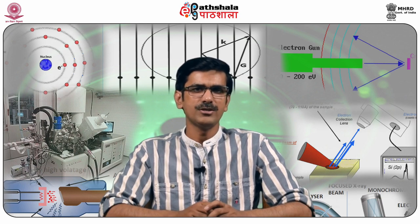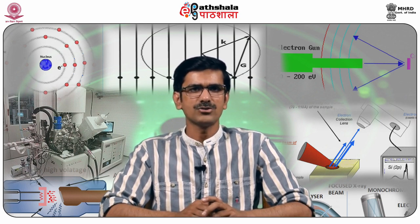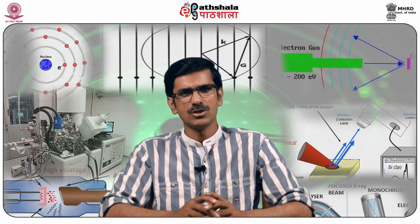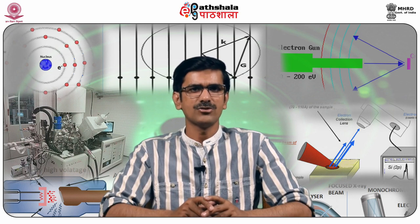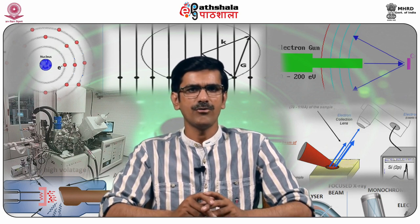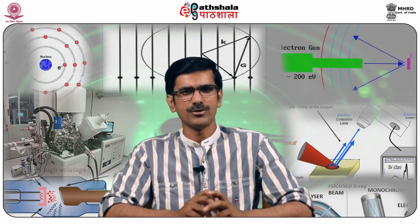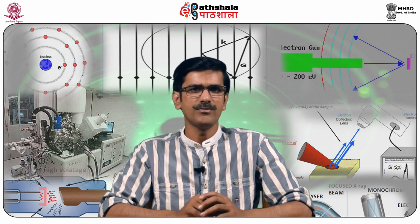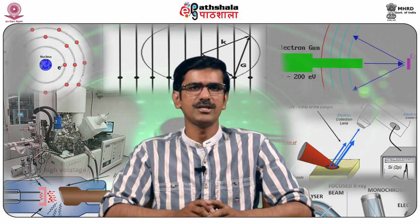Photoelectron spectroscopy, also known as PES or photoemission spectroscopy, refers to the energy measurements of electrons emitted from solids, liquids, or gases by the photoelectric effect in order to determine the binding energies of an electron in a substance. The term refers to various techniques depending on whether the ionization energy is provided by an X-ray photon or an ultraviolet photon. All photoelectron spectroscopy revolves around the general theme of surface analysis by measuring the ejected electrons.